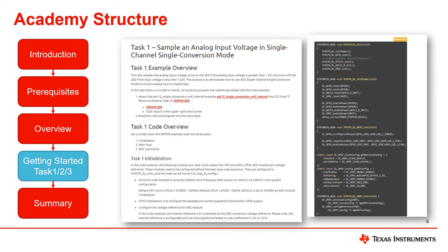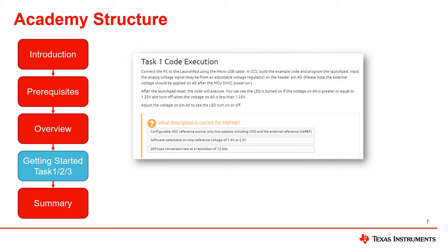The fourth section is the main task section, usually using reference software examples to explain specific peripheral functions and software configurations. The software configuration is explained in conjunction with software source files and our easy to use SysConfig tool. Often at the end of a task, there is a small quiz section that combines the lessons of the previous tasks and the background knowledge. These questions are usually related to further developing and modifying the software examples to meet a specific application requirement.